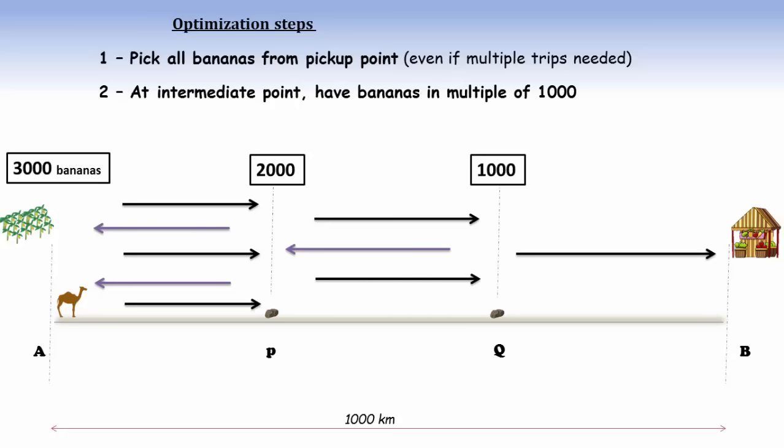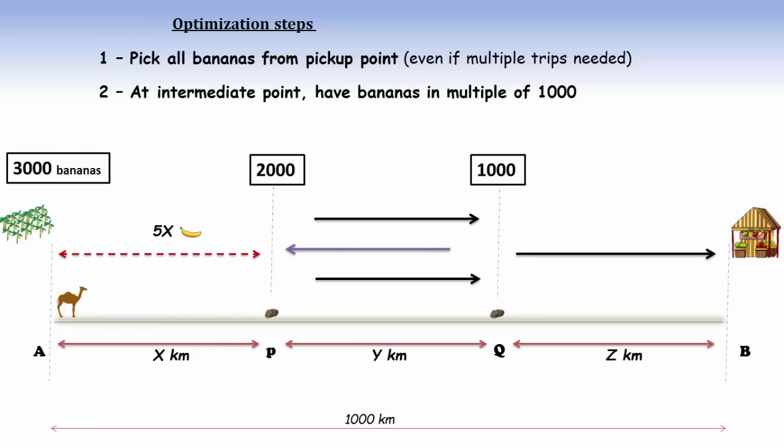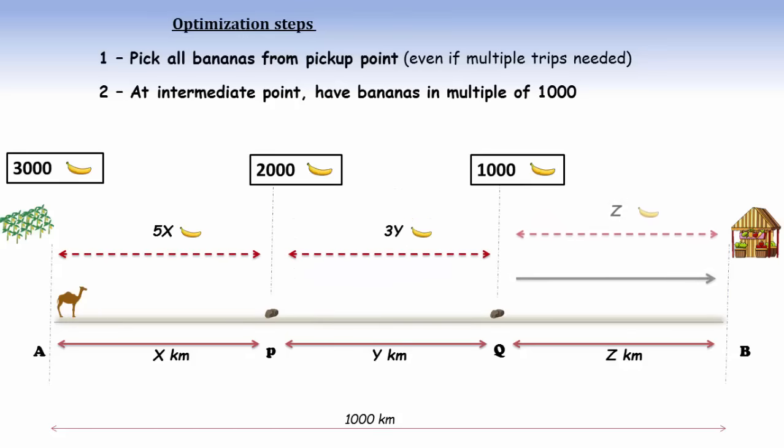Now it's just a matter of simple mathematics. Consider the length of segments as X, Y, and Z. In the segment AP, the camel is travelling 5X kilometers so it consumes 5X bananas. In segment PQ, it consumes 3Y bananas and in segment QB, it consumes Z number of bananas.